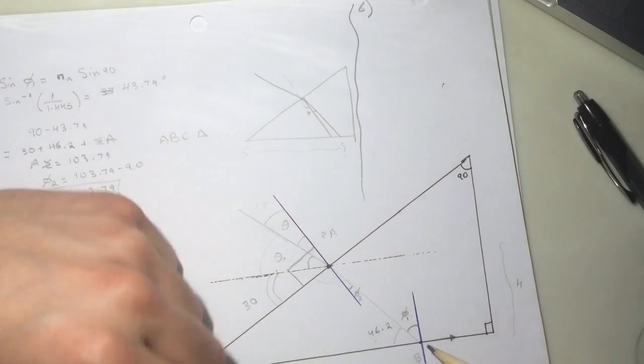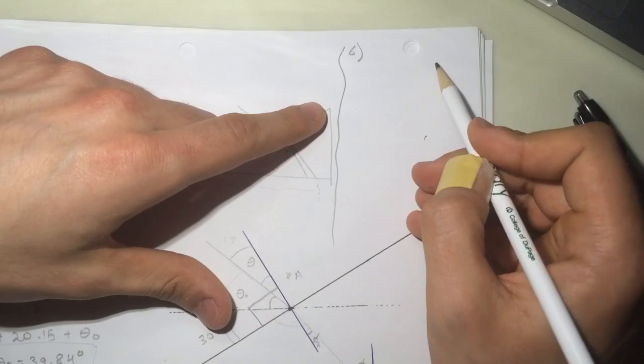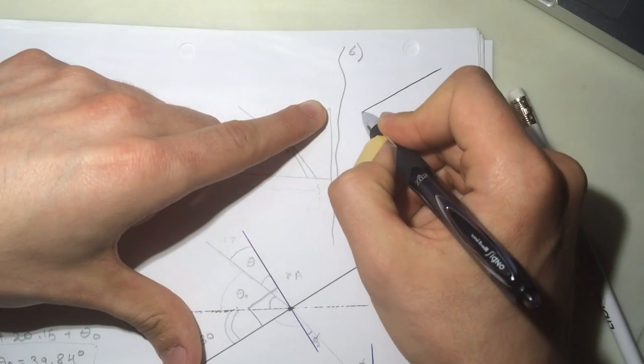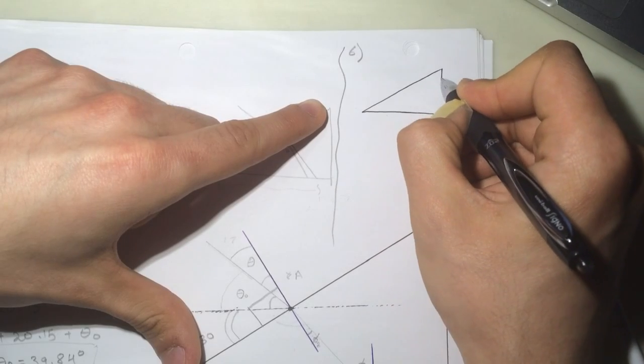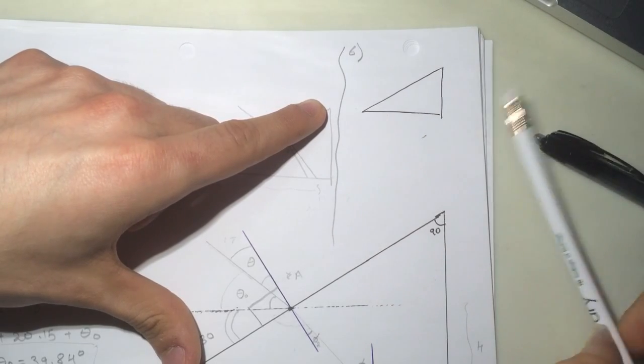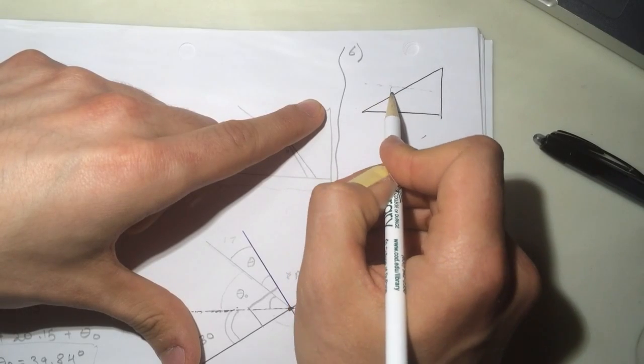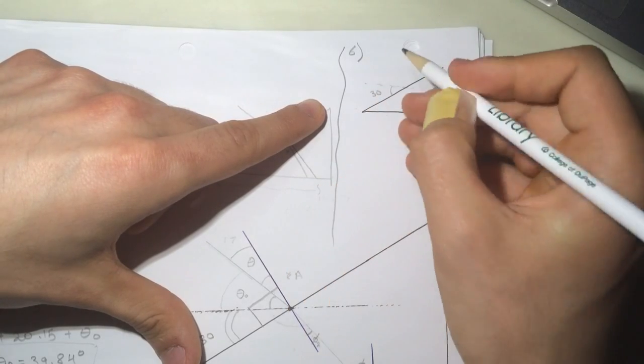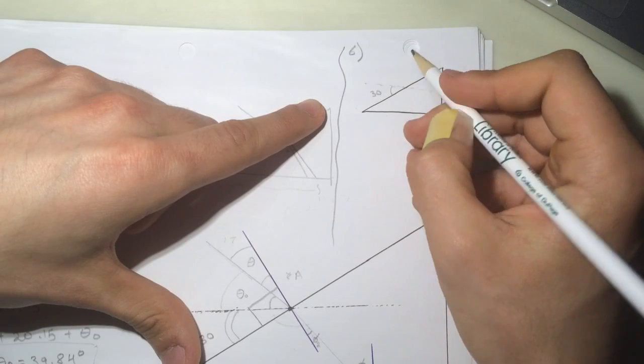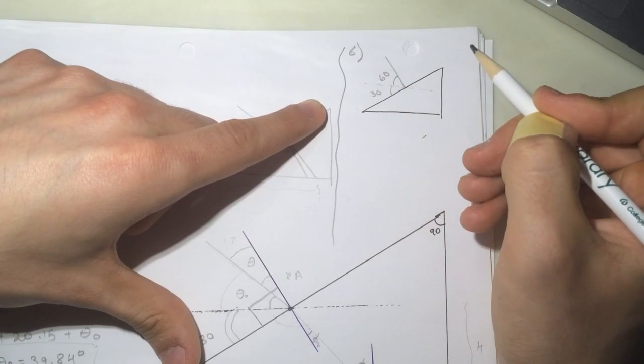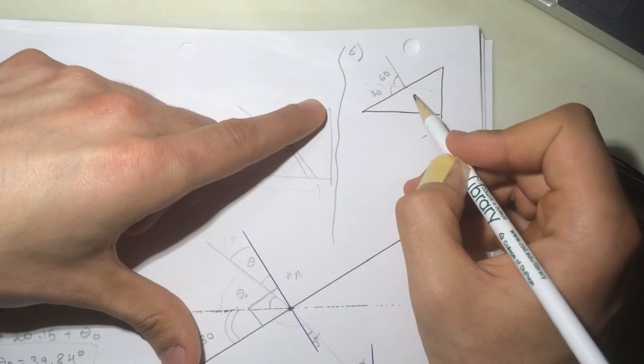So this is 30 degrees and they said that it's 60 degrees. If you look closely, it's going to be perpendicular to the surface, right? So this is going to be 60. When it entered the first time, it's going to go right straight.